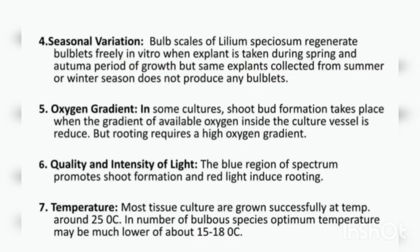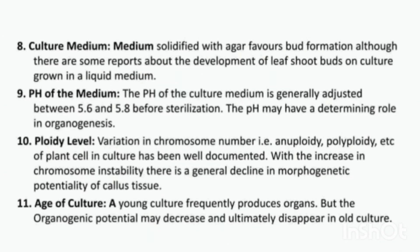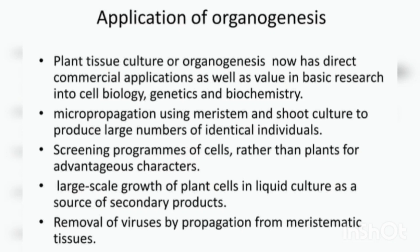Temperature is also important for development of callus. Regarding culture medium: when solidified with agar it favors bud formation, and the pH of the medium should be 5.6 to 5.8 before sterilization. The ploidy level is another factor — variation in chromosome number affects plant culture, and when there is increased chromosomal instability there will be a decline in callus tissue development. The age of the cells is also important.